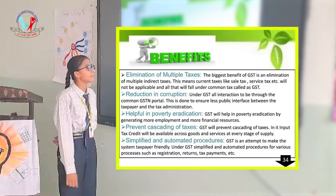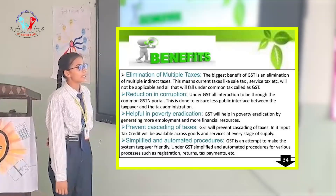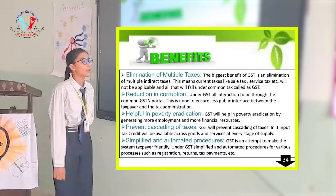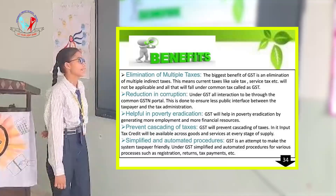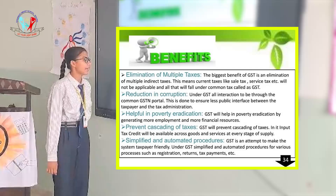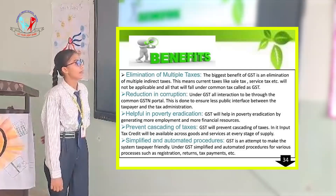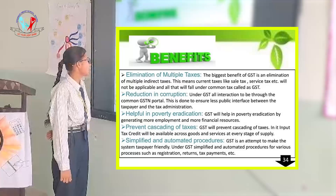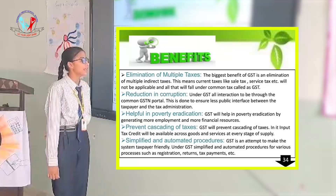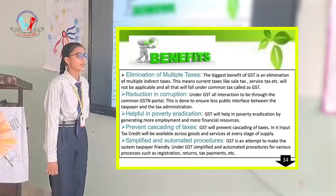The third benefit is helpful in poverty eradication. GST will help in poverty eradication by generating more employment and more financial sources. The fourth benefit is prevention of cascading of taxes. GST will prevent the cascading of taxes through its input tax credit mechanism, which will apply across goods and services at every stage of supply.